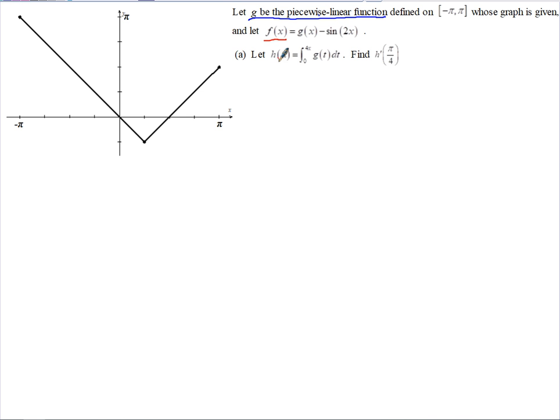We've got the graph of g, f we're given an equation, and then part (a) we're given an equation. So for part (a), before we can find h'(π/4), we need h'(x).